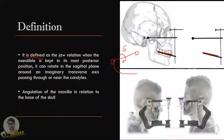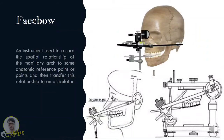This is the definition, but the most important thing to understand about orientation jaw relation is its objective. As the name suggests, we are trying to orient the maxilla in relation to the base of the skull. So in the previous slide we understood the objective of orientation jaw relation, which is to obtain the spatial relationship of the maxilla with respect to the base of the skull.